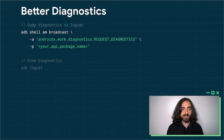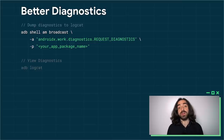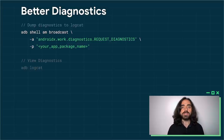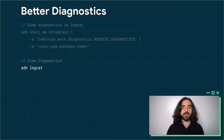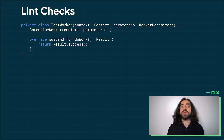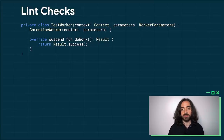Let's look at another improvement to WorkManager: Diagnostics. Sometimes it's hard to know why a worker didn't run when you expected it to. For those cases, we have added a new Diagnostics API that you can invoke via ADB to peek into the internal state of WorkManager. When invoked, WorkManager will dump its current state into logcat, which you can view via an ADB logcat command. As WorkManager is adopted by more applications, we have identified some common mistakes and added lint rules to catch these, so that Studio can immediately inform you if that happens in your codebase.